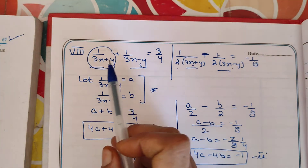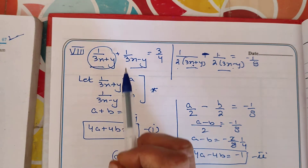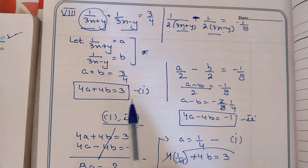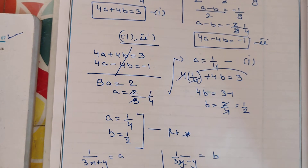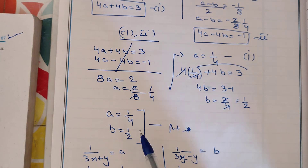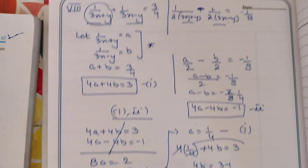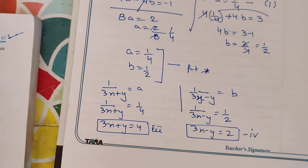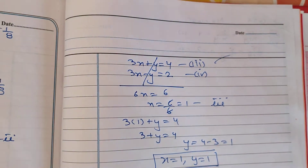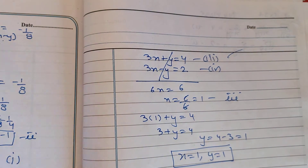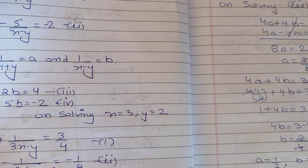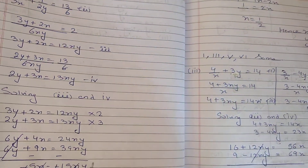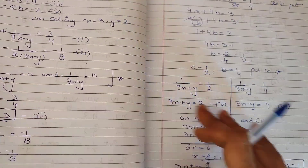Let me revise the steps for you. First, identify the common part in both expressions and let it equal A and B. Then put these into the original equations to reduce them — you may need to take LCM or cross-multiply. Solve both reduced equations simultaneously using any method — elimination or substitution. The values of A and B you get are not the final answer; put them back into the starred equations where you originally made the substitution. Two more linear equations will form, and solving those gives your final answer.